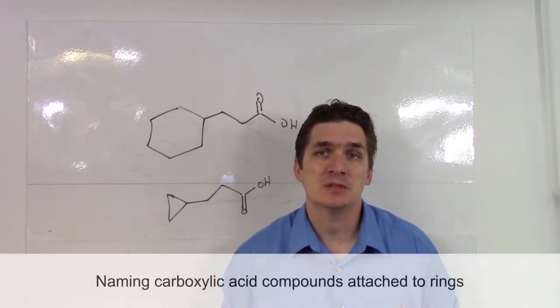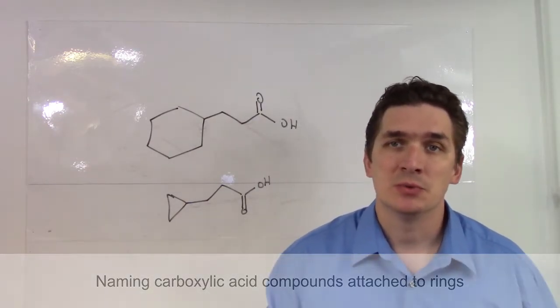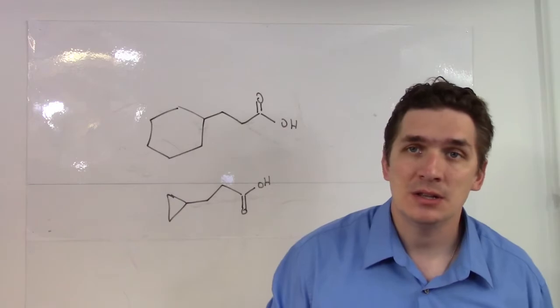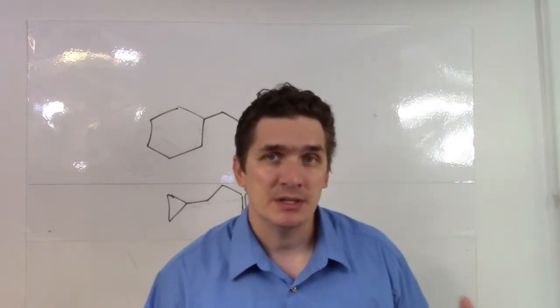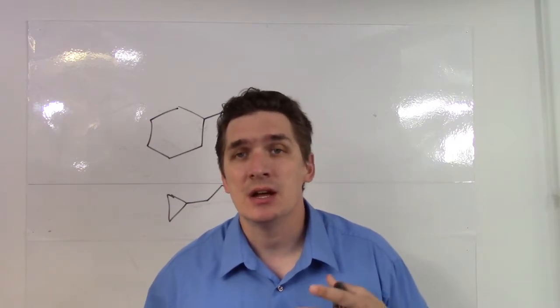Well, traditionally when it comes to naming rings for simple alkanes, we looked at the number of carbons in the ring and we said, well, if there's more carbons in the ring than there is in the alkyl chain, the ring takes priority. If there's less carbons in the ring than there is in the alkyl chain, the alkyl chain takes priority.